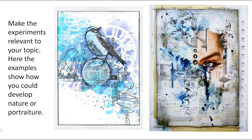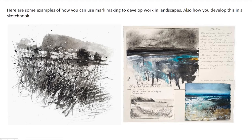Some mark making specific to landscapes - these are slightly more abstract and free, using mark making in ink on the left and paint on the right. Again, an example of how that could be recorded in the sketchbook with annotation. Think about how you can use paint and different mark making techniques in paint, not just cross-hatching and pencil.